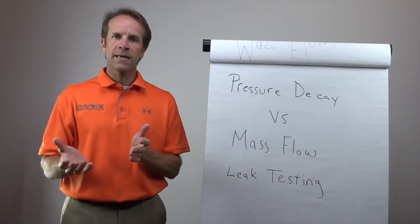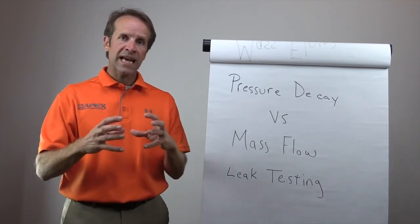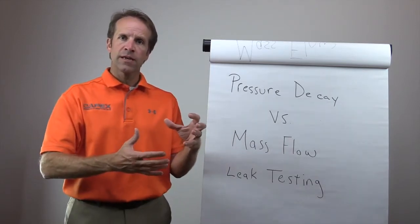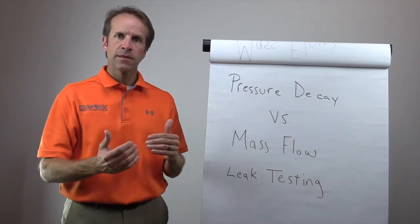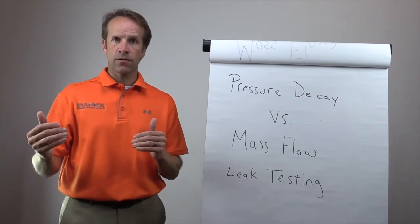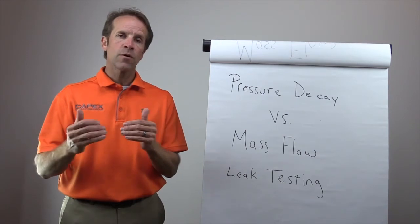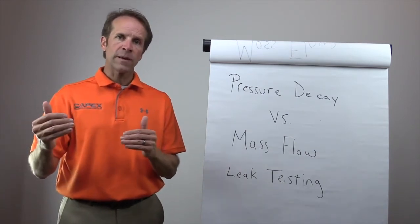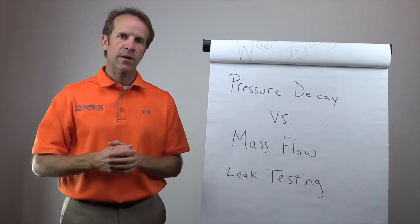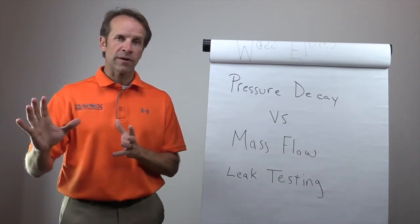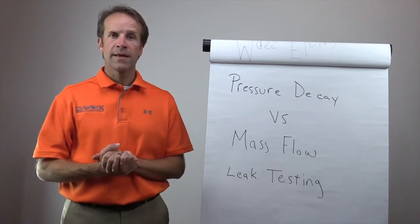Well, what does that mean compared to pressure decay? Well, pressure decay, we are isolating the circuit, right? So essentially, we're cutting the flow of air off, and we're measuring the degradation of pressure. With mass flow, we are not cutting the flow of air off to the part. We are continually flowing into the part through a flow meter and essentially balancing the pressure across that regulator. So when you don't have any flow going in, it's going to measure zero as a result.